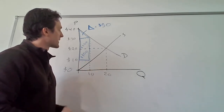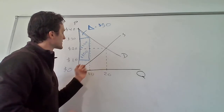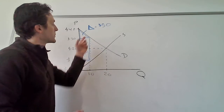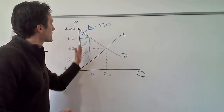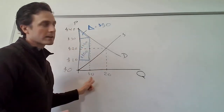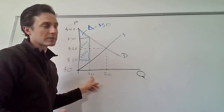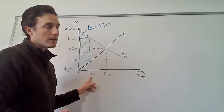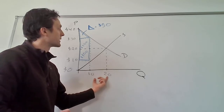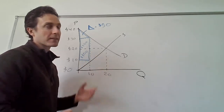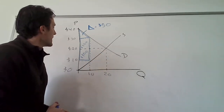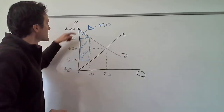With a $10 price ceiling, the quantity supplied is only going to be 10 units. People are only going to be able to buy 10 units. Nobody will want to supply the other 10 units needed to reach the equilibrium quantity of 20, because they can't charge a high enough price to make it profitable.